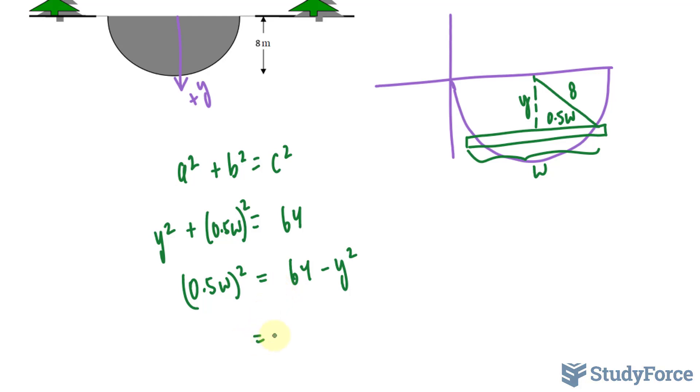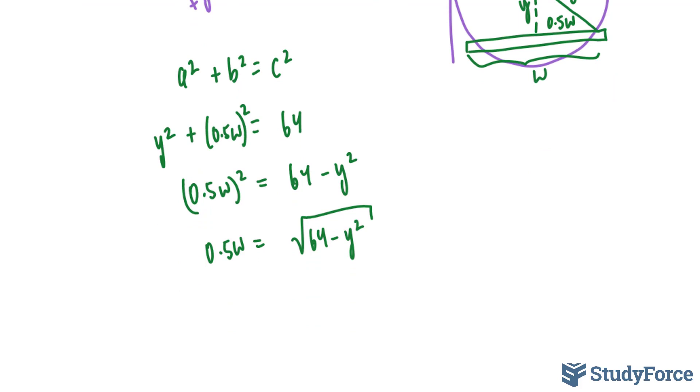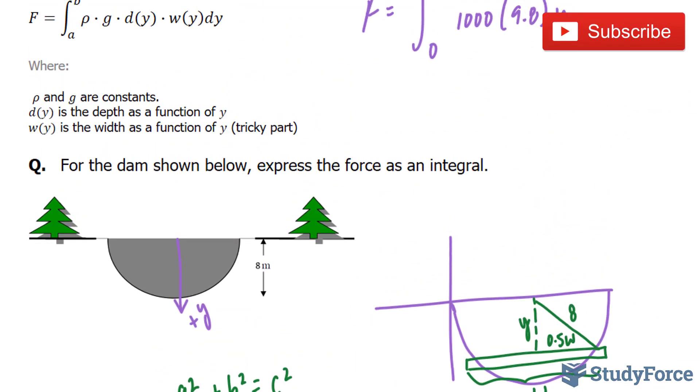Square root both sides, that gets me the square root of 64 minus y squared equals 0.5w on the left side. Dividing both sides by half, we end up with 2 times this expression. And look, we just found an equation in terms of w and y. Let's substitute this equation into our growing function.